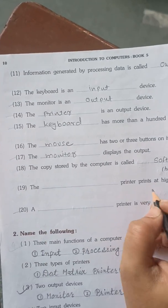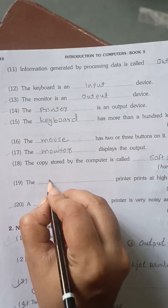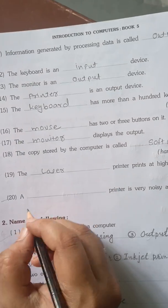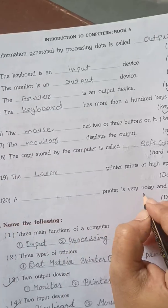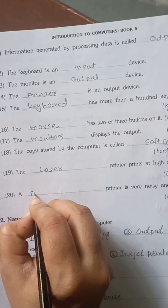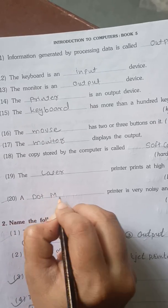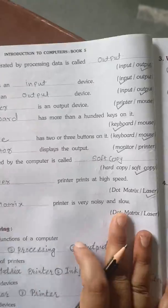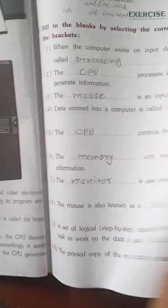The blank printer prints at high speed, laser. As I explained to you last time, laser printer works at fast speed. A blank printer is very noisy and slow, dot matrix. I explained this to you also. So these are our 20 blanks which you have to write in your computer book.